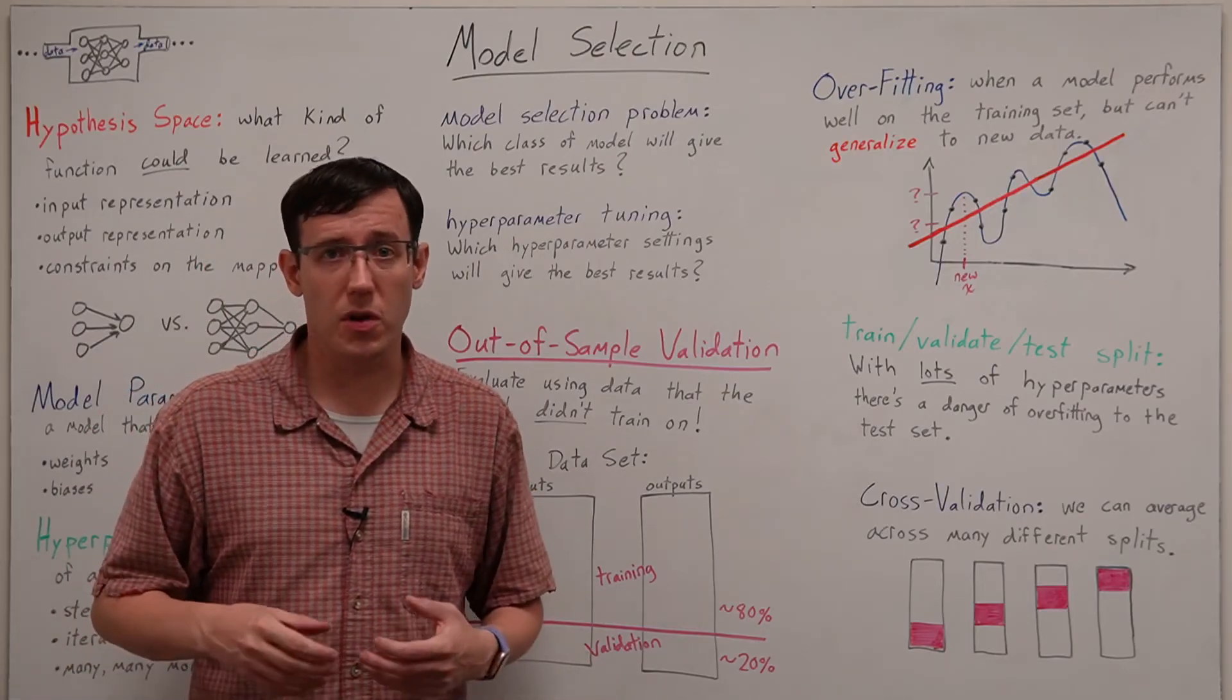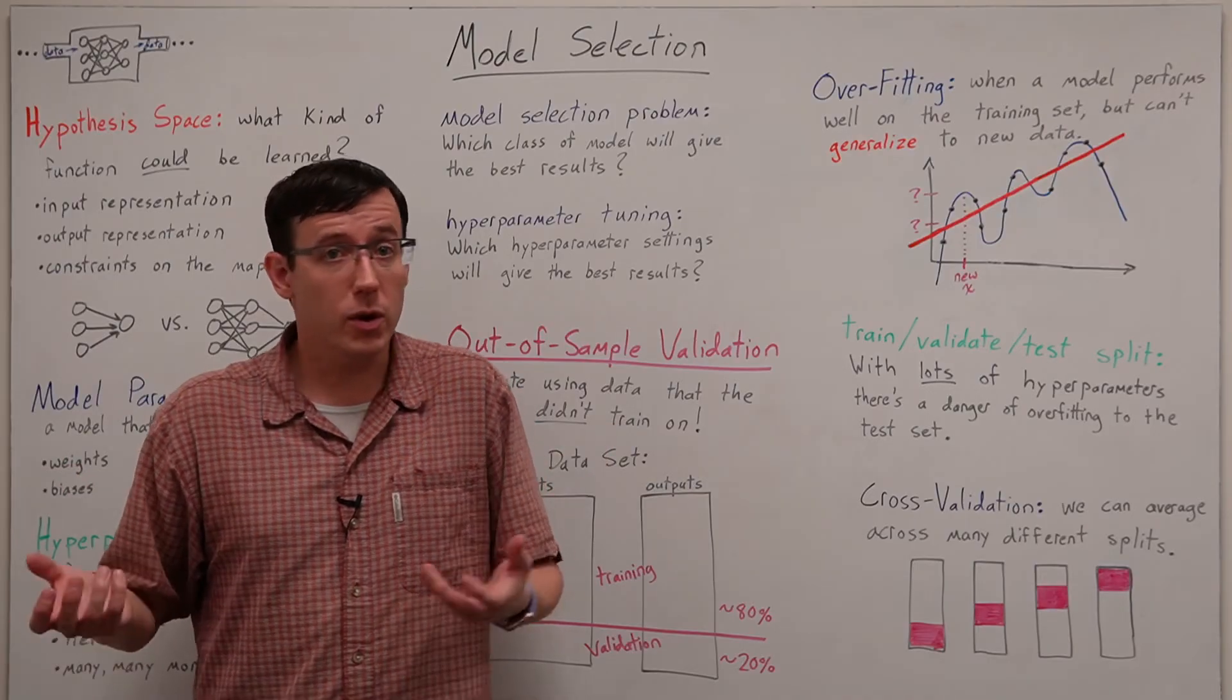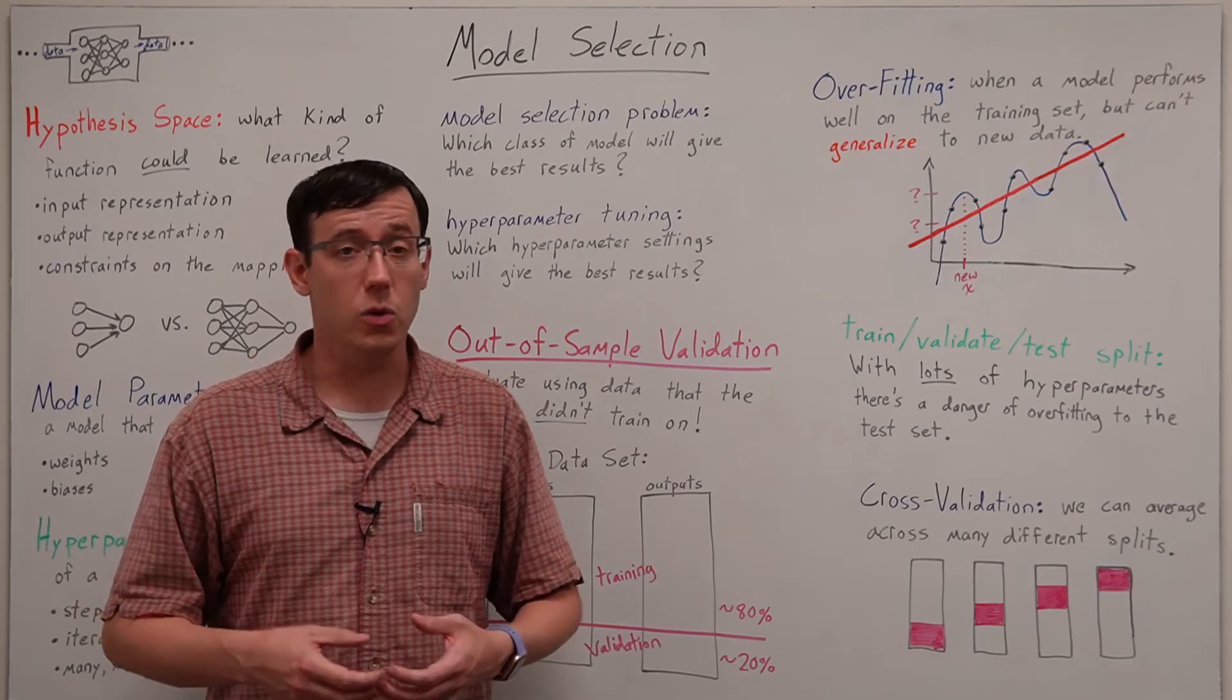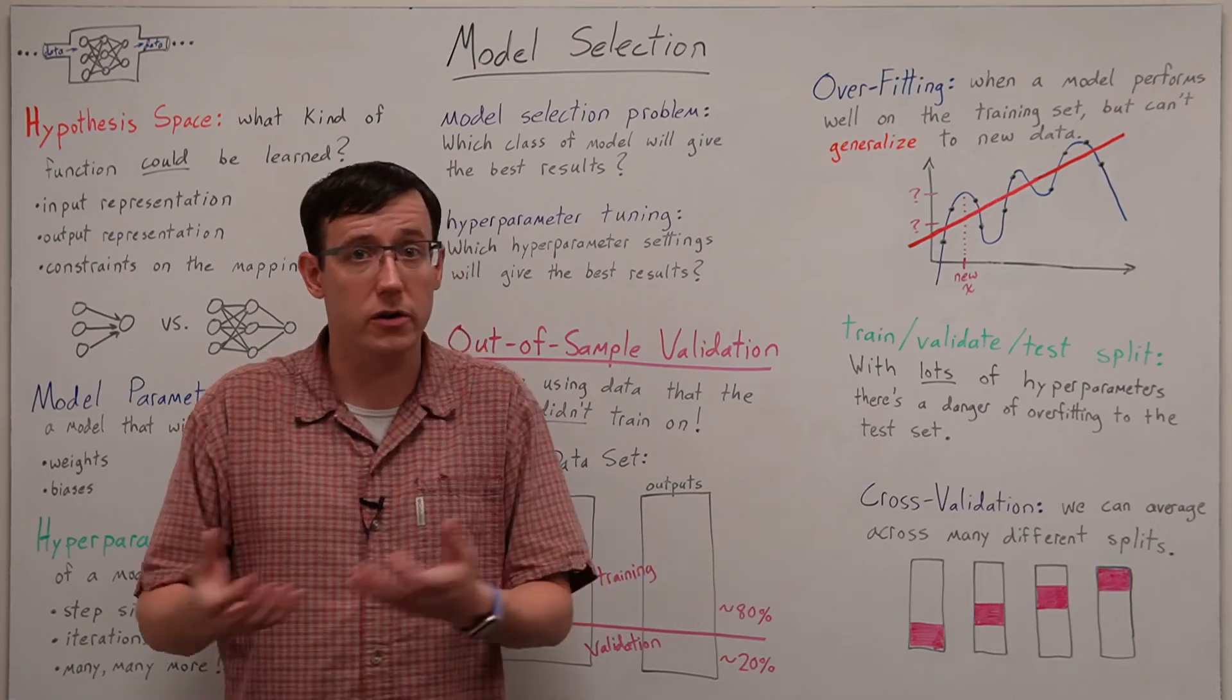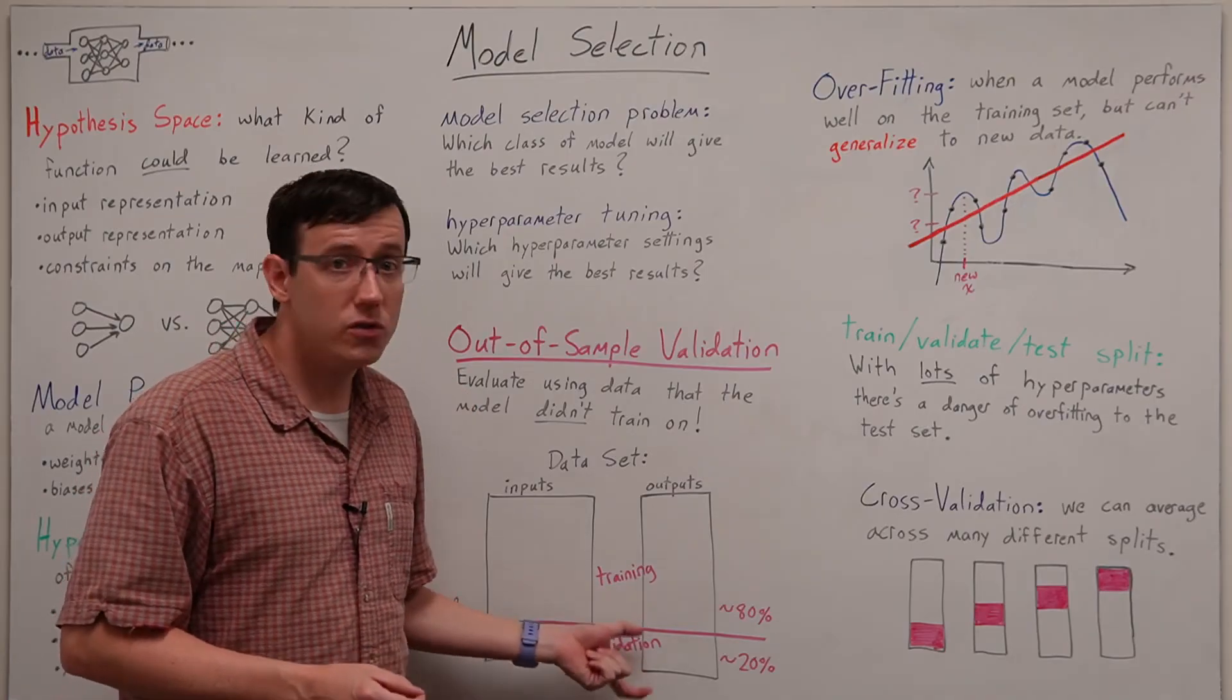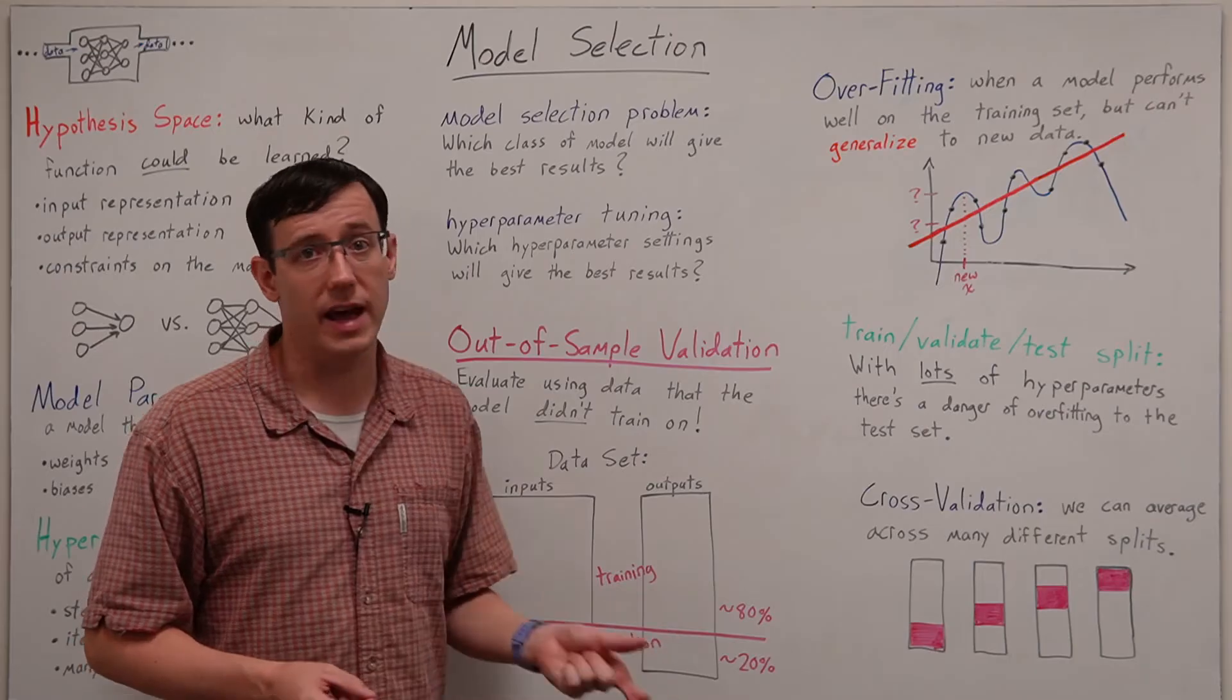Wanting our models to generalize is important because if we never expected to see new data there would be no point in doing machine learning in the first place. Our entire goal is to come up with a model that can make good predictions on new data and so to make sure that we're able to do that we had better use some of our data to test that our model succeeds in that goal.